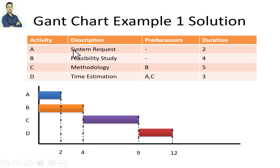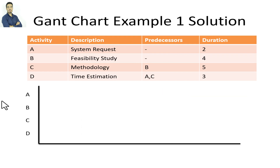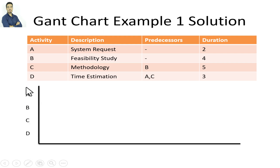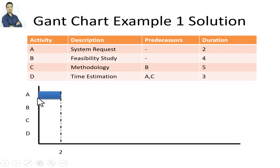So at the beginning of the chart, we start with activities that don't have any predecessors. We begin by drawing two axes: the X axis and the Y axis. Next to the Y axis we write the names of the activities, starting with the first activity at the top and the last at the bottom. Activities without predecessors, like A and B, begin from the Y axis.